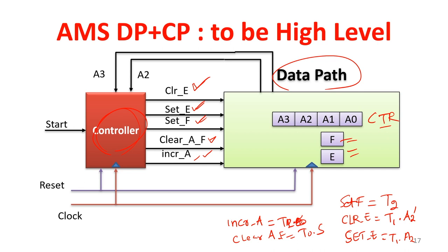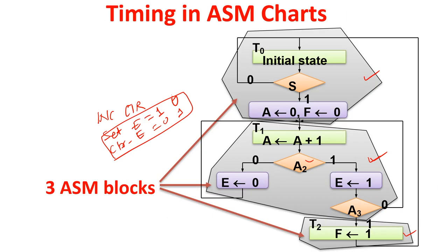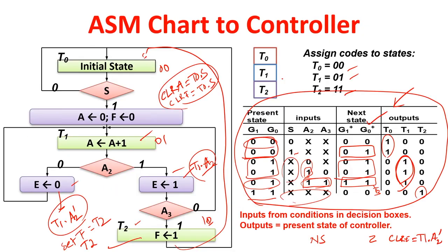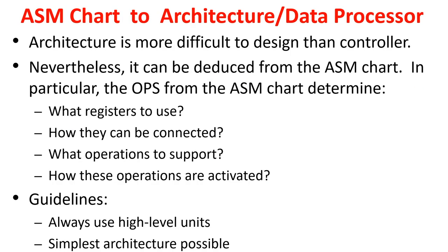These are the control signal variables from the FSM. A2 and A3 status come from the counter. Start signal comes from outside. All FSM elements — registers and flip-flops — require a clock signal. This is how the controller and data path will look together. The controller is already designed; from the state table we can design the next state logic.